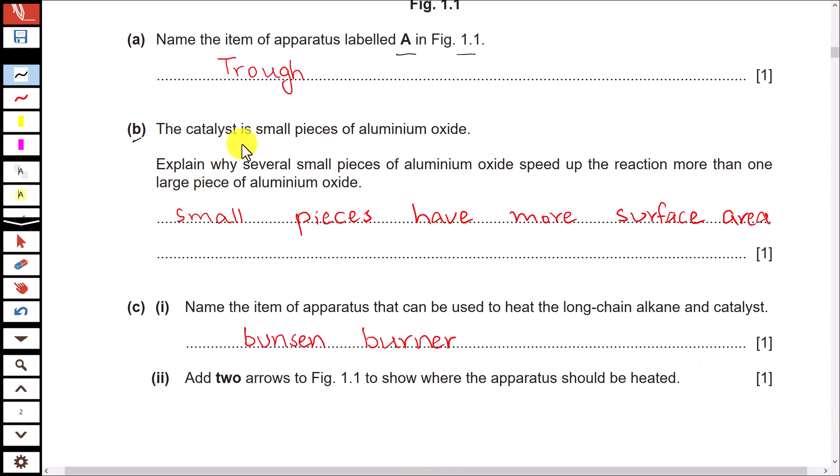Part B. The catalyst is small pieces of aluminum oxide. Explain why several small pieces of aluminum oxide speed up the reaction more than one large piece of aluminum oxide. Because small pieces of aluminum oxide have more surface area or large piece of aluminum oxide has less surface area.